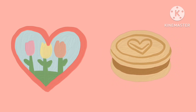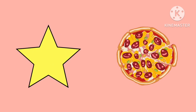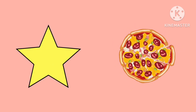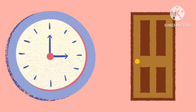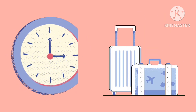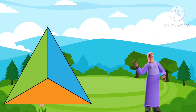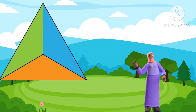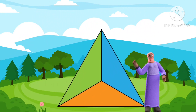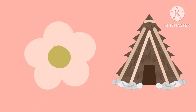The ball also has a circle shape. Pizza is also a circle shape. A clock is also a circle. Balloons also have a circle shape. Triangle! I'm a triangle. I have three sides.